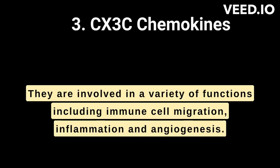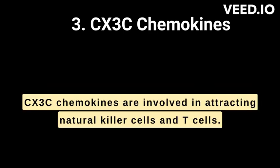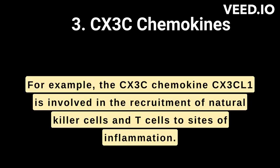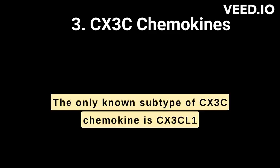CX3C chemokines. They are involved in a variety of functions, including immune cell migration, inflammation, and angiogenesis. CX3C chemokines are involved in attracting natural killer cells and T cells. For example, the CX3C chemokine CX3CL1 is involved in the recruitment of natural killer cells and T cells to sites of inflammation. The only known subtype of CX3C chemokine is CX3CL1.